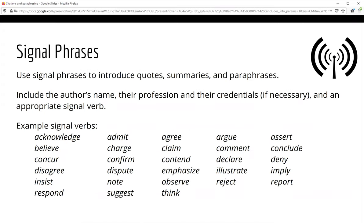When you introduce information from a source for the first time, it is important to provide context by using a signal phrase. This means that you will include the author's name, their profession and credentials if necessary, and an appropriate signal verb. Notice that the word 'says' is not on this list — instead, you see verbs that provide deeper meaning. In academic papers, it is important that you let the reader know if an author agrees with an idea, responds to a question, or asserts a point.